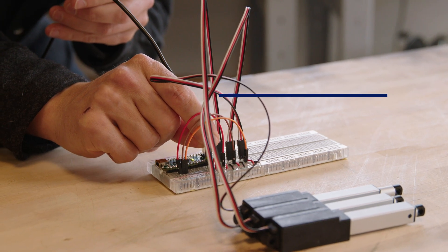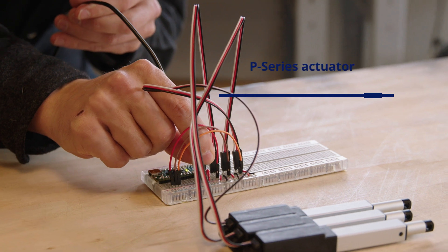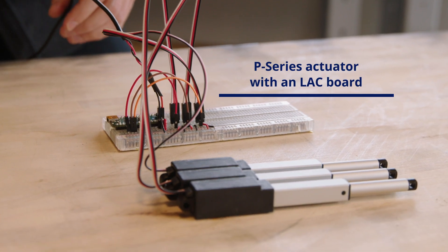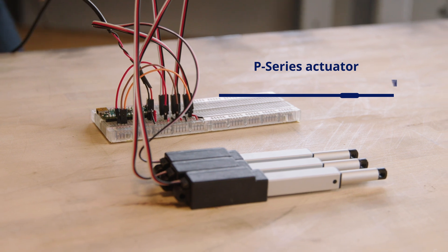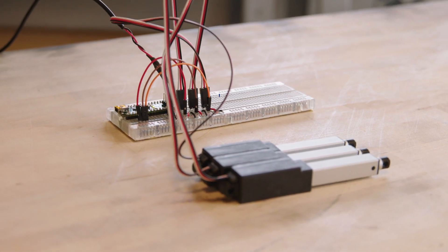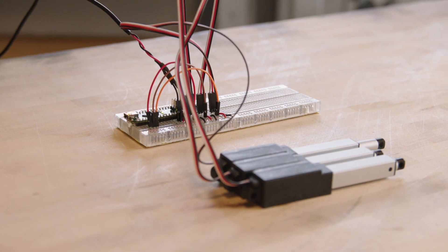Next up, we recommend using a P-series actuator with an LAC board. An LAC board gives you onboard control of the actuator speed. You can also achieve more fine-tuned adjustments by using our LAC utility, which you can download from our website.